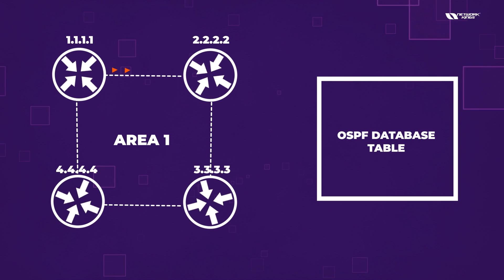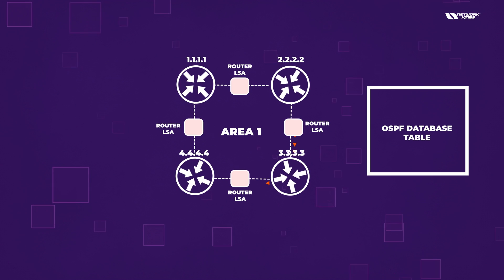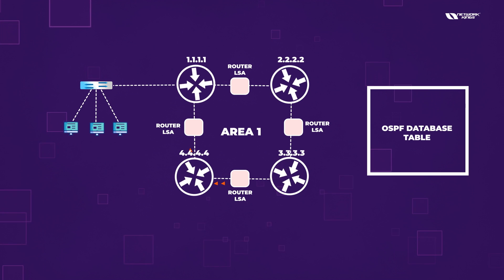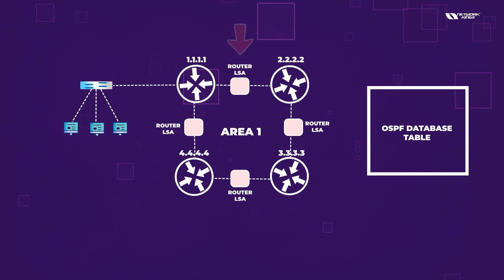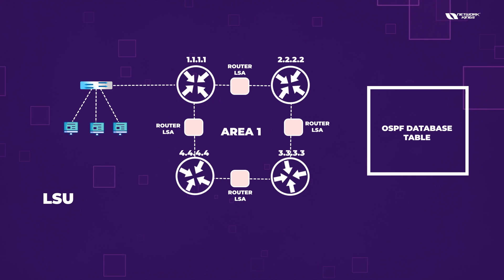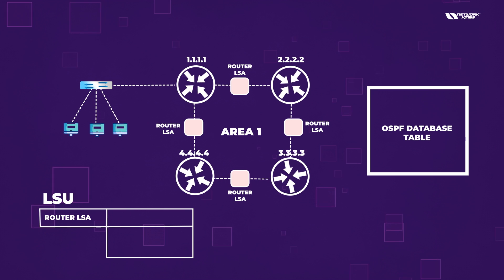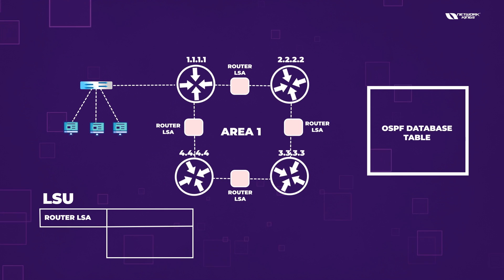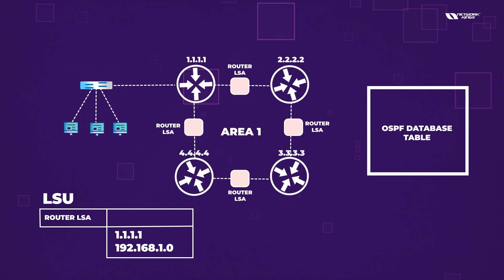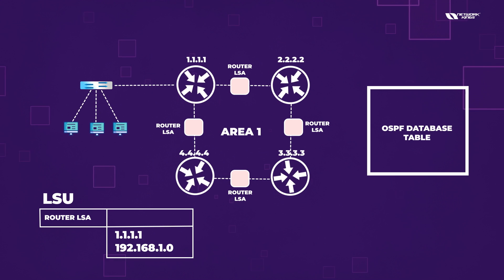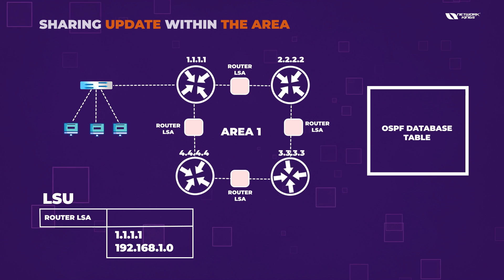All routers will send their router ID and basic information to each other using the Router LSA. They will update information — suppose we have a LAN network here. Whatever LAN networks the routers have, they are going to share a Link State Update packet. Inside the LSU you have a lot of information about which LSA you are sending. Inside the Router LSA you are sharing your networks — for example, my ID is 1.1.1.1, my LAN network is 192.168.1.0 — sharing your information with your area routers.